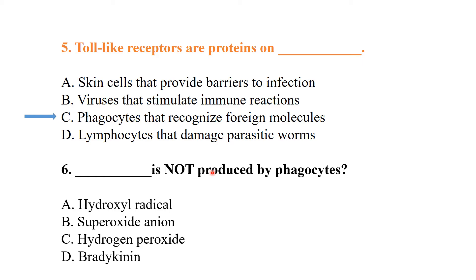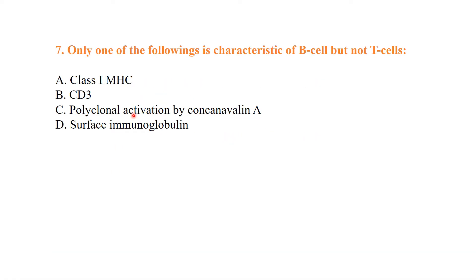Among the chemicals produced by phagocytes through phagocytosis — superoxide ions, hydroxyl radicals, and hydrogen peroxide — these chemicals destroy pathogens. However, bradykinin is not produced by phagocytes.